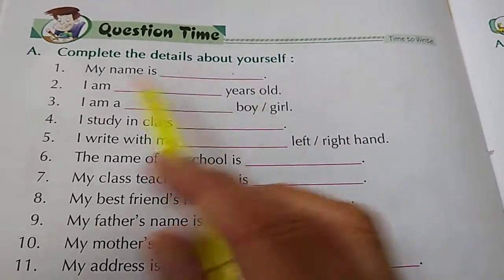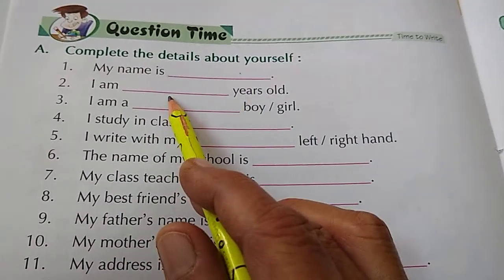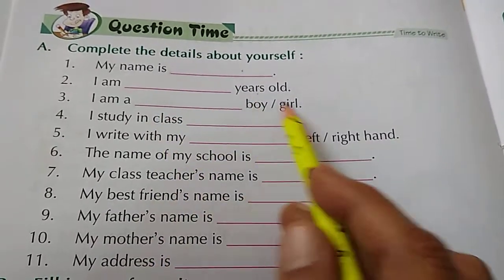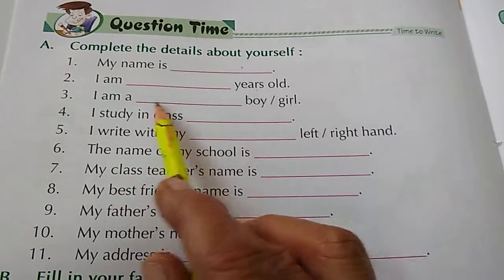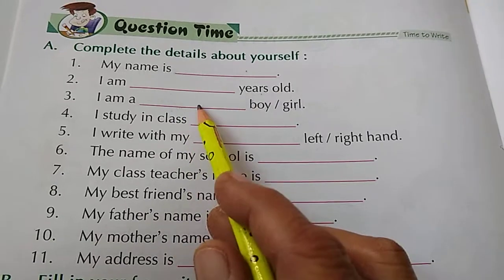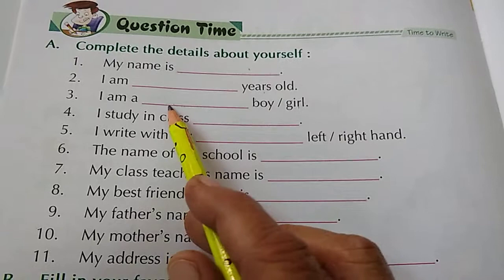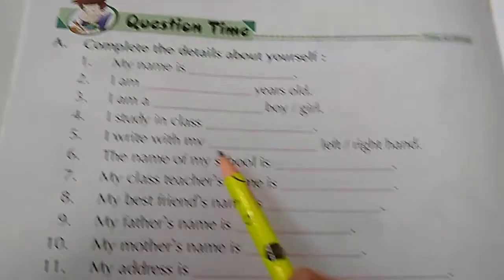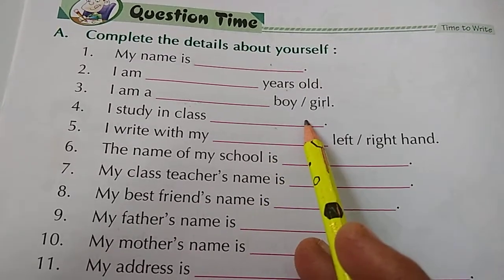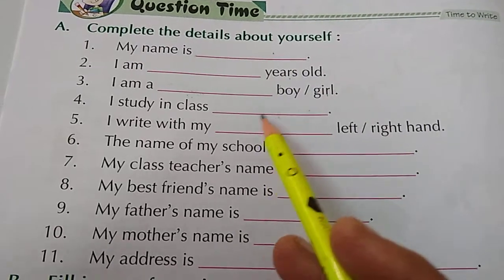You will write your name here. Next: I am — perhaps you are seven years old, so you will write seven years old. Then you will write whether you are a boy or a girl. If you are a boy, write boy; if you are a girl, write girl. And your class — I study in class — you write your class and section, whether it is second A, second B, or second C.